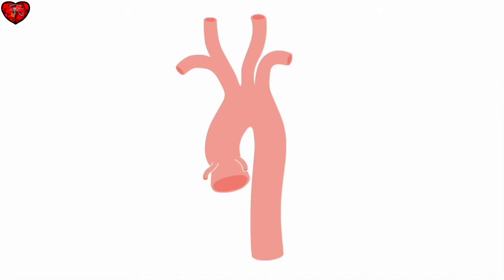Transoesophageal echocardiography in general provides good views of the thoracic aorta, extending all the way from the aortic valve, round the aortic arch, and down the descending thoracic aorta to around the level of the diaphragm.